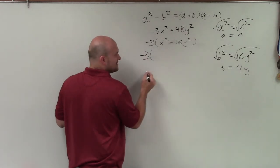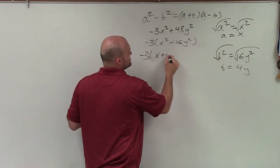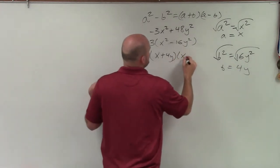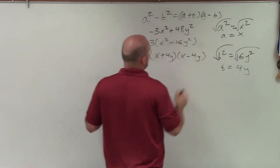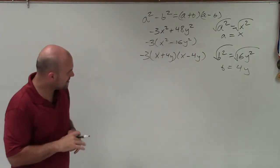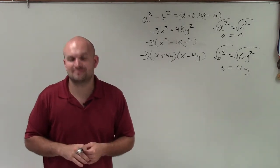Now, remember, we still factor out the negative 3, but now it is x plus 4y times x minus 4y. So there you go, ladies and gentlemen. That is how you determine your difference of two squares. Thanks.